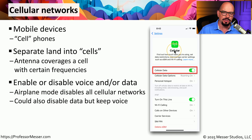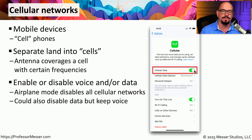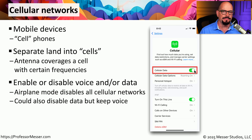You get to decide how that information is used by your mobile device. For example, you can turn on and off the cellular data functionality and perhaps only use this as voice communication. Or you may be familiar with airplane mode, which disables all communication on the device, and then you can pick and choose which ones you'd like to turn on.